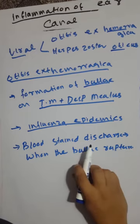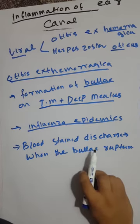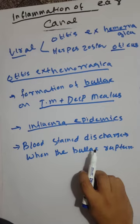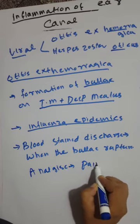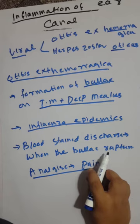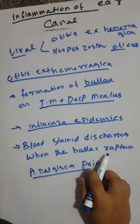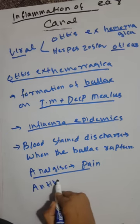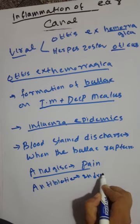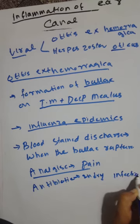When the bullae rupture, blood-stained discharge appears. The treatment of otitis externa hemorrhagica is directed at giving relief from pain, using analgesics. Antibiotics may also be used for secondary infection of the ear canal.